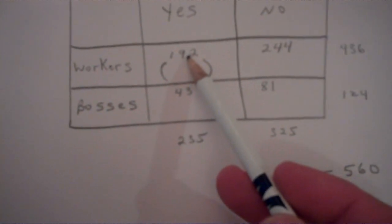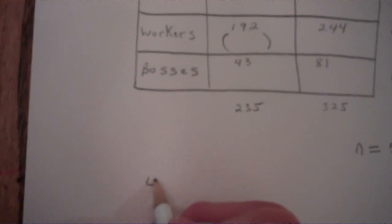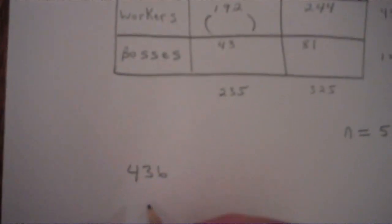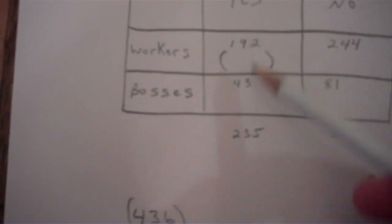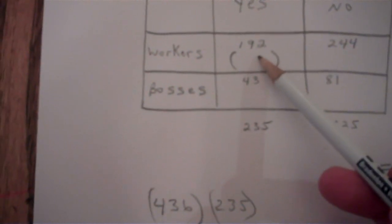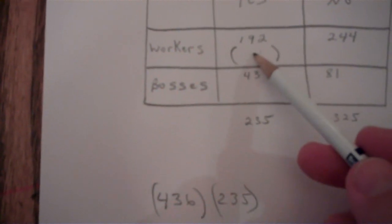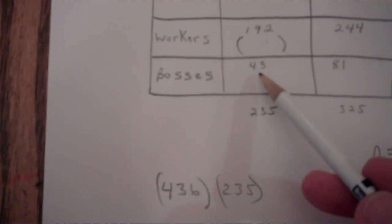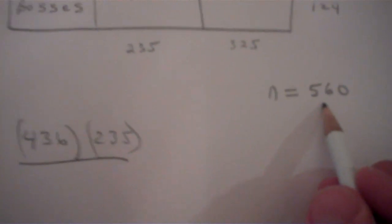Now we're going to take the row total here, these two numbers and add them up, and we get 436. So I take 436, or the row total, times the column total, which is 192 and 43, so we get 235. So again, this cell here is in this first row, we take that row total. This is in this column, so we take that column total. Row total times column total, all divided by total number in the entire table is 560.